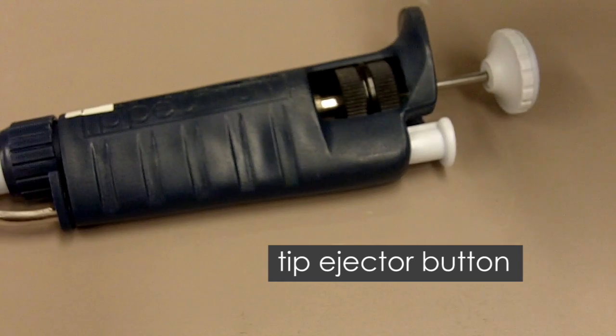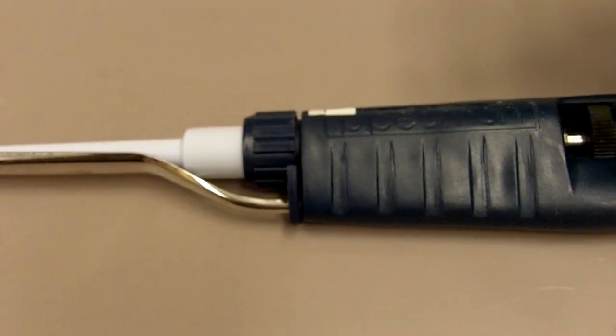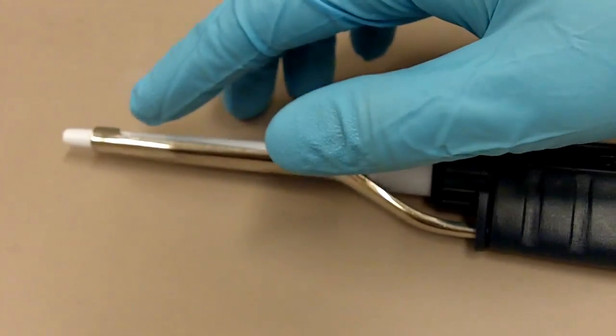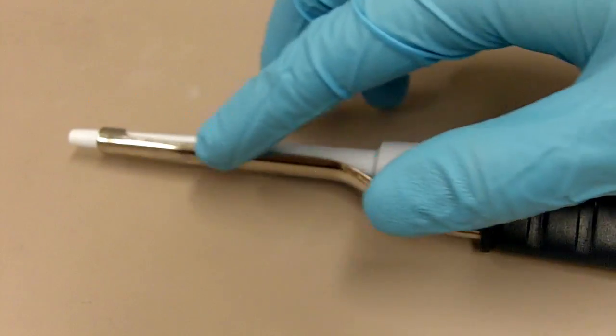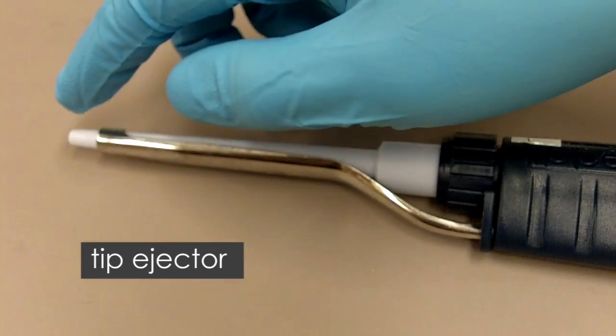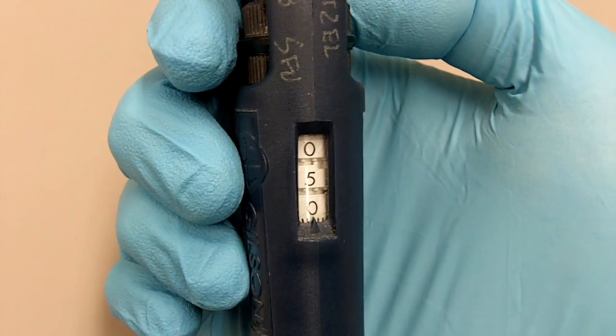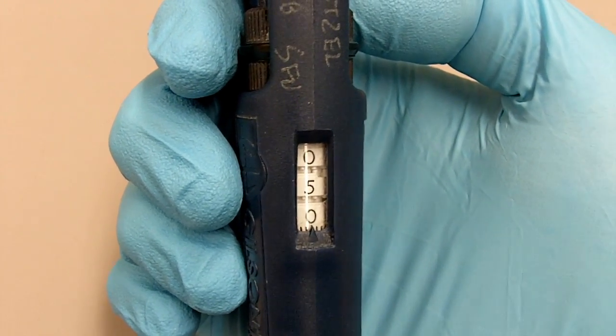So if we look at the end of the pipette, you'll see this middle part right here is the tip ejector and the tip goes on to the end of the pipette. I'm going to go over the basic features of the pipette again in a close-up view.